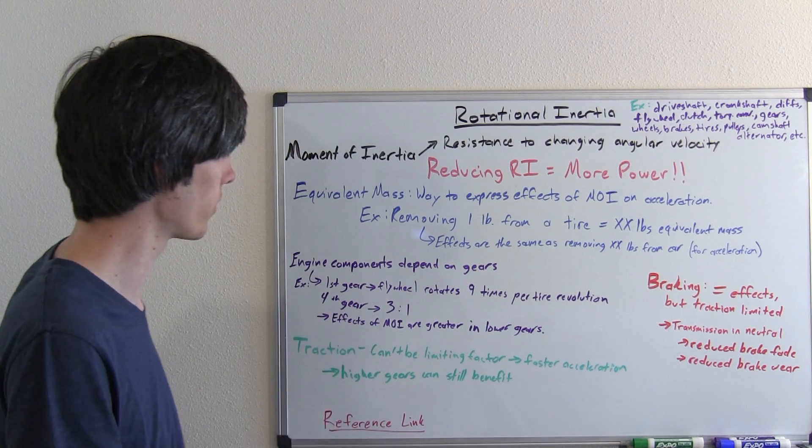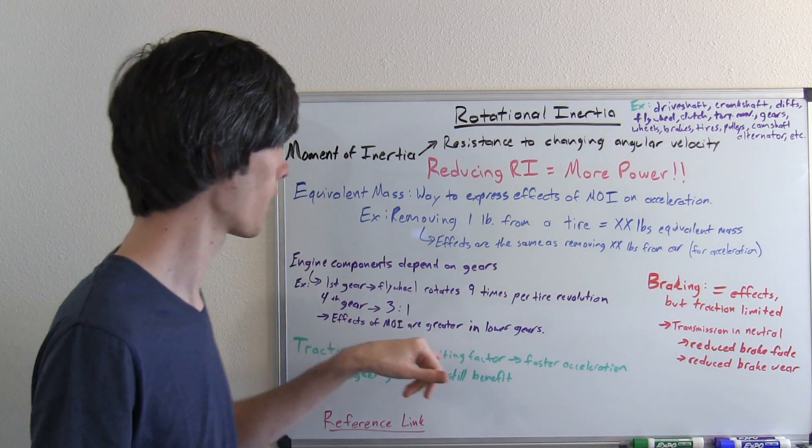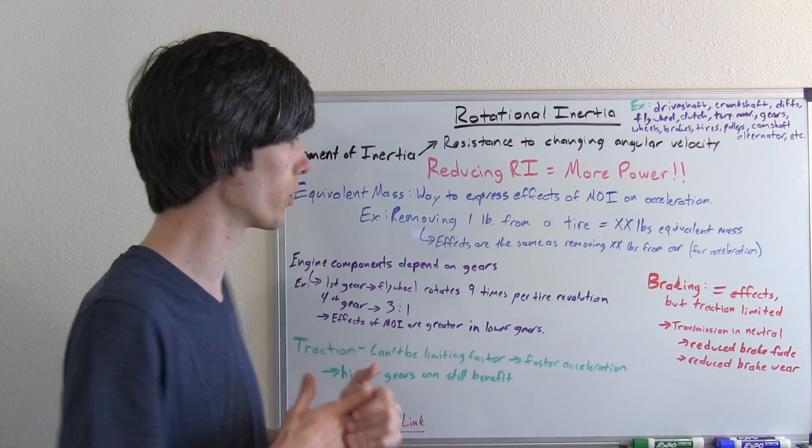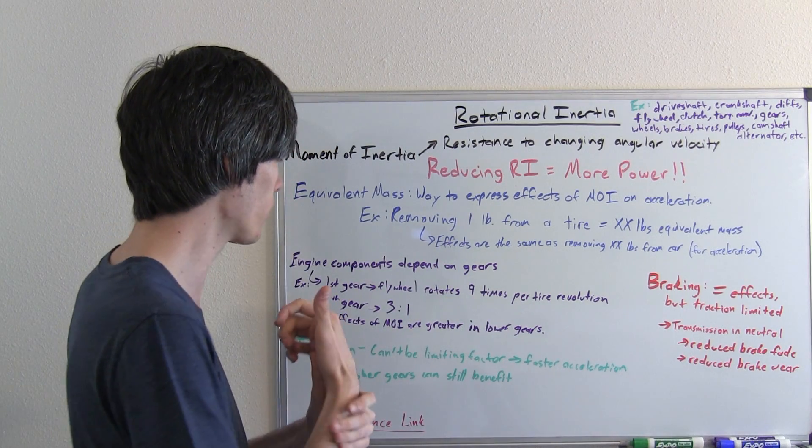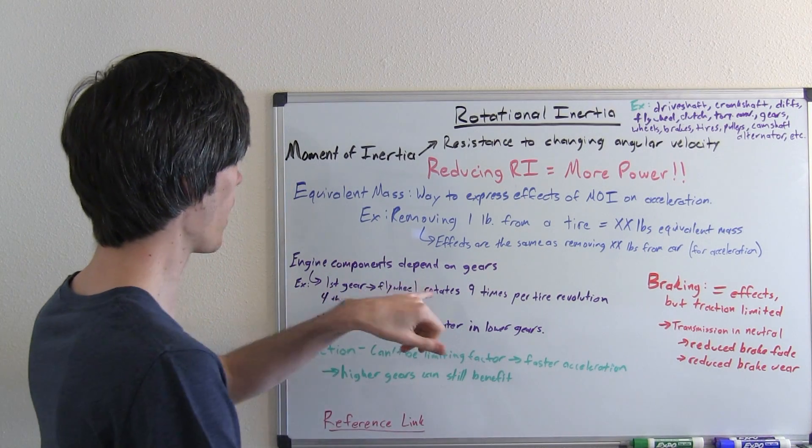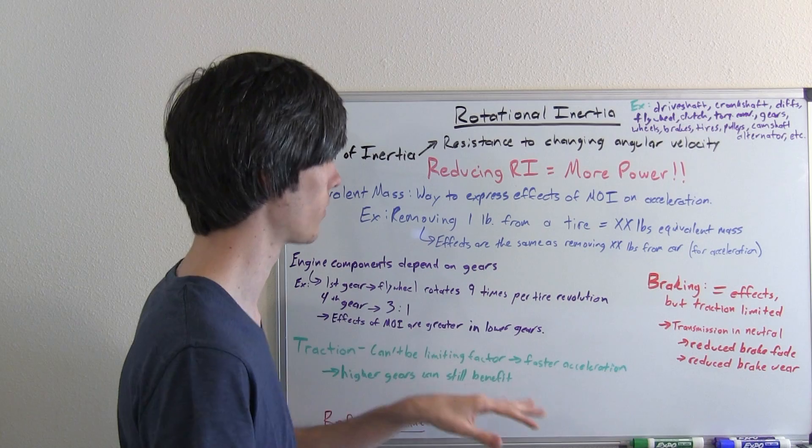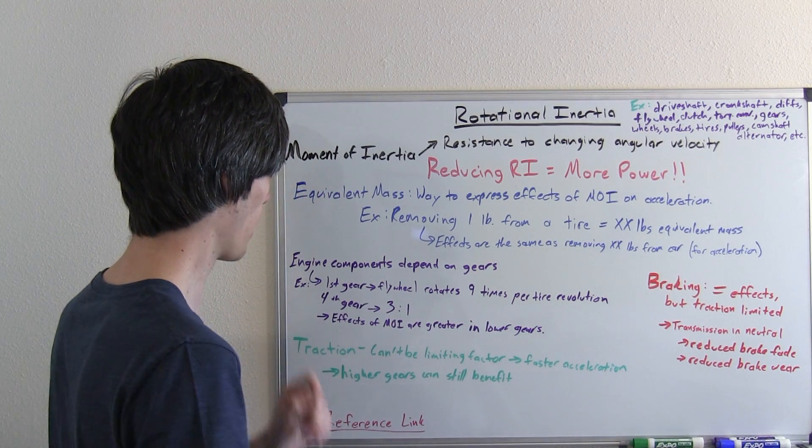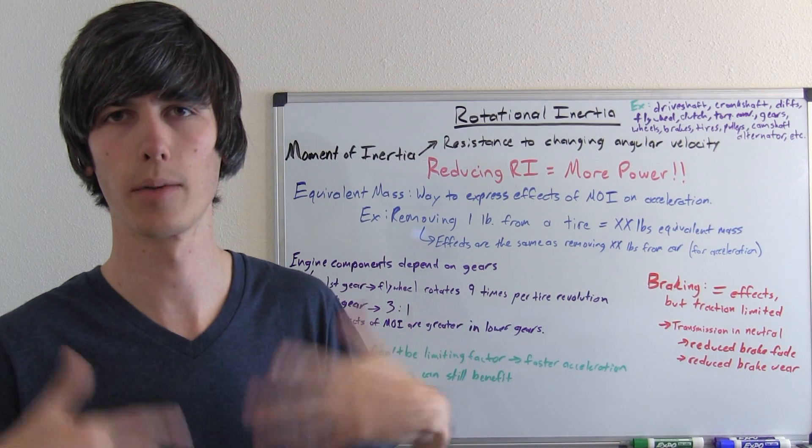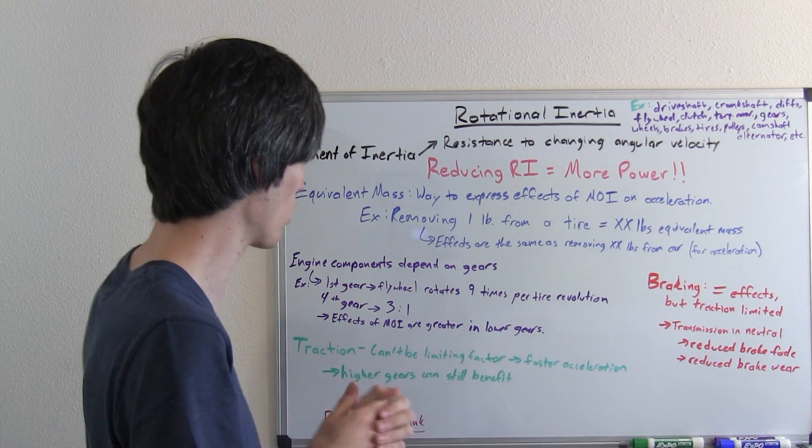So what that's telling us is the effects of moment of inertia are greater in your lower gears because they're rotating more times for your wheel to rotate one time. So the important thing to get out of that is you will have higher equivalent masses in lower gears than in higher gears for engine components. Things like wheels, obviously, they're always going to be rotating the same amount with the speed of your car.